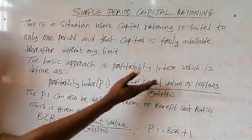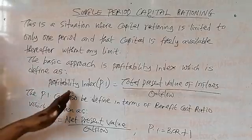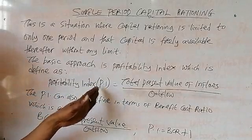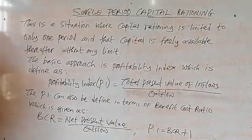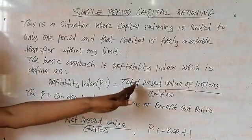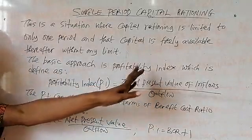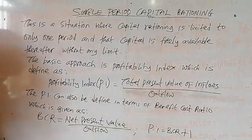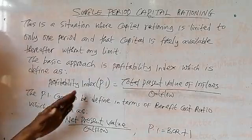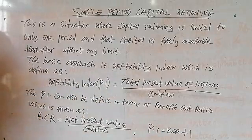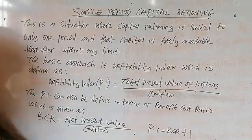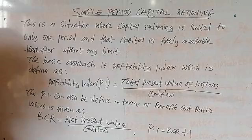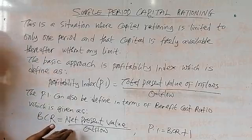The basic approach is the Profitability Index, abbreviated as PI, which is defined as the total present value of inflows over the initial outflow. When you compute and sum up the total present value of inflows divided by the outflow, what you arrive at is your Profitability Index. The Profitability Index can also be expressed in terms of the Benefit-Cost Ratio, and there is a relationship between Profitability Index and Benefit-Cost Ratio.